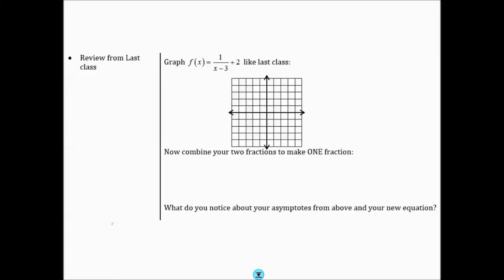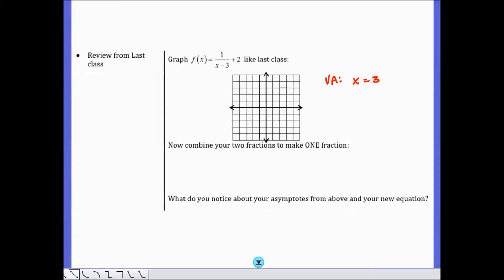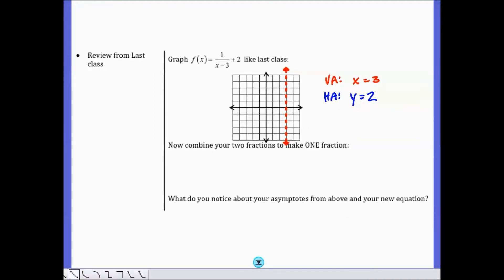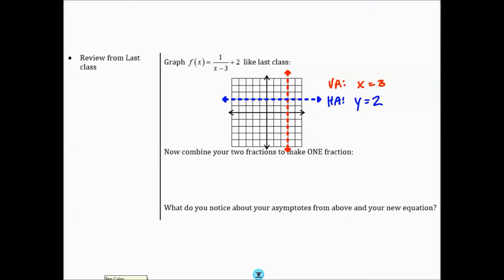First let's start with a problem like we saw last class. We have f of x equals 1 over x minus 3 plus 2. This function would have a vertical asymptote of x equals 3 and a horizontal asymptote of y equals 2. If you type this in the calculator and go to the table to find extra points, your graph would look like this.